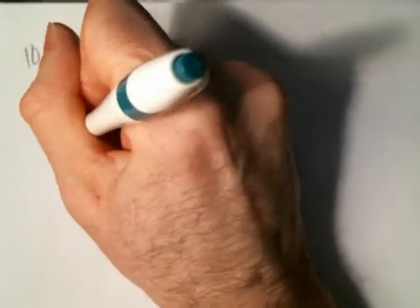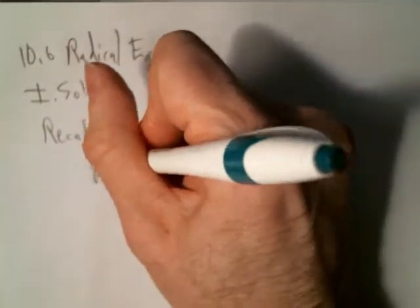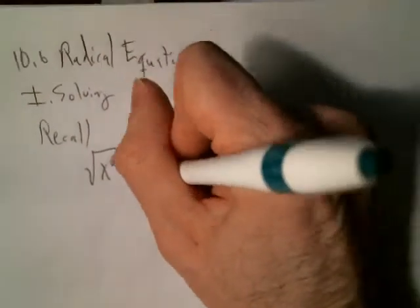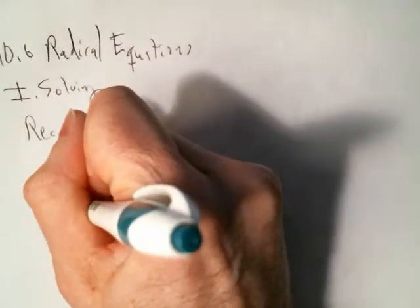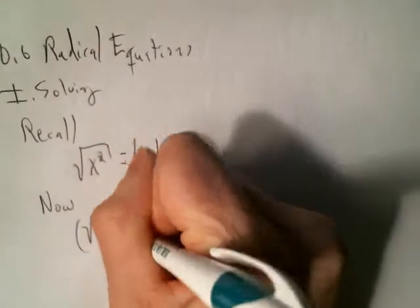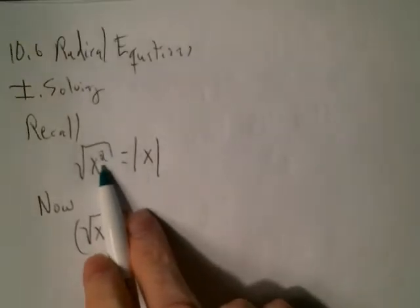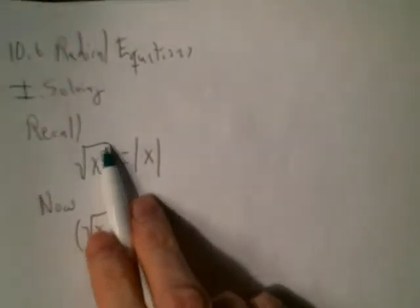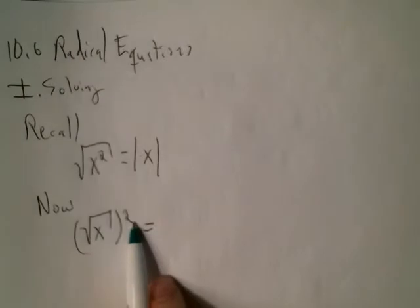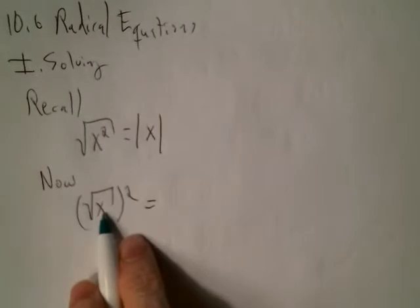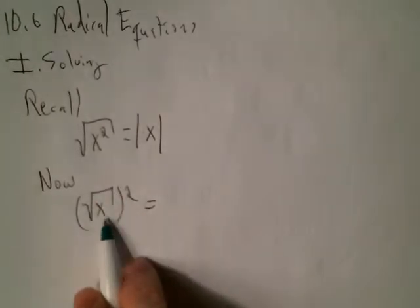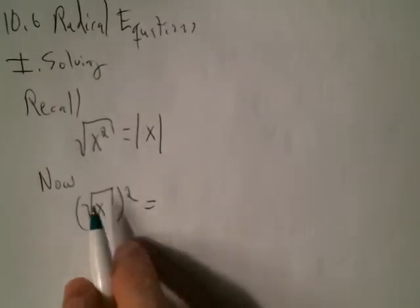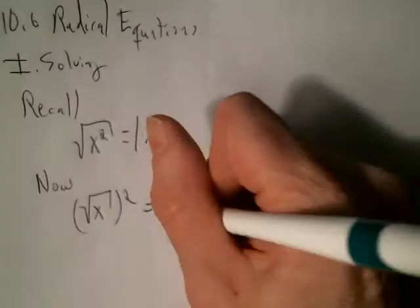One tidbit of information: recall that the square root of something squared, presuming x can be negative, is always the absolute value of x. This is a different scenario than what we have in this section. Here it's more like the square root of x squared equals something — the squared is on the inside, then the square root. When this order happens, you don't have to worry about absolute value, because you can never put a negative inside a square root in the first place.